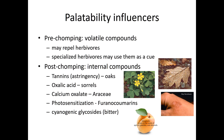First, palatability influencers. These can happen before the herbivore ever attacks the plant — pre-chomping influencers — such as volatile compounds that make a plant smelly, or glandular trichomes that produce smells repelling herbivores. Although specialized herbivores might interpret that smell as a sign of good food. Or these palatability influencers could be post-chomping: internal compounds that lead to astringent taste, like tannins in oaks, tangy tastes like oxalic acid in sorrels, calcium oxalate, or furanocoumarins that lead to photosensitization. They might also be bitter cyanogenic glycosides.